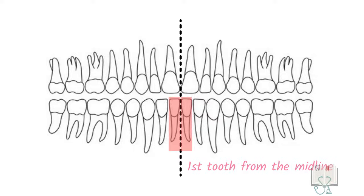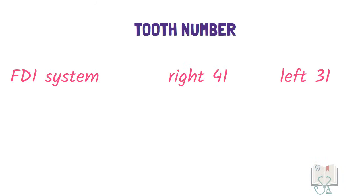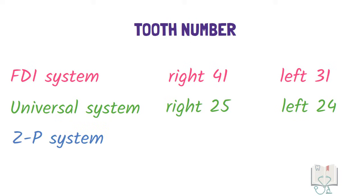Permanent mandibular central incisor is the first tooth from the midline. Its tooth number in FDI system is 4-1 and 3-1. In universal system it's 25 and 24, and in Zygmunt depilament system it is 1 with appropriate quadrant brackets.